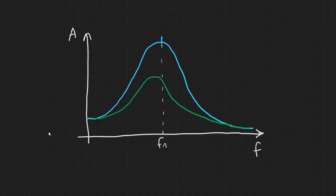If damping is applied, the amplitude is reduced and the resonant frequency becomes slightly lower than the natural frequency. The more damping we apply, the lower the amplitude and the lower the resonant frequency.